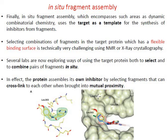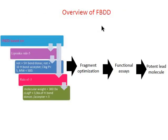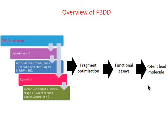This slide presents an overview of fragment-based drug discovery. First, the rule of three is applied for identifying fragments, followed by fragment optimization using various methods such as linking, merging, or combining. The lead or hit molecules obtained are then subjected to functional assays, ultimately yielding potential lead molecules representing potential clinical candidates. That concludes the overview of fragment-based drug discovery.